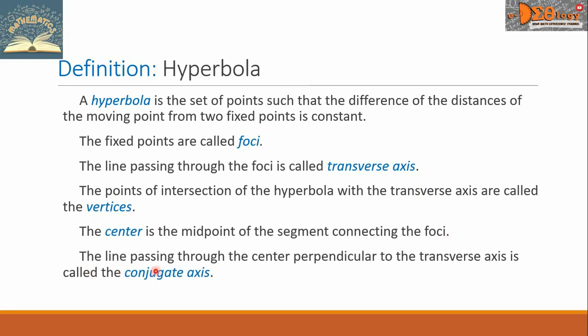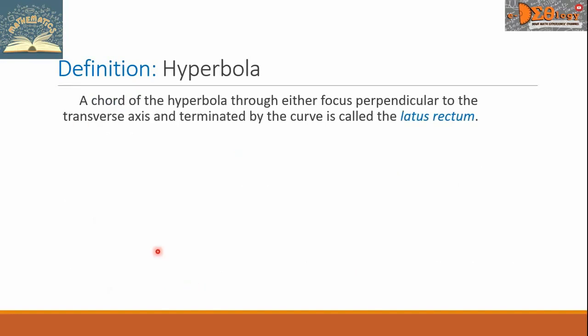The line passing through the center perpendicular to the transverse axis is called the conjugate axis. A chord of the hyperbola through either focus perpendicular to the transverse axis and terminated by the curve is called the latus rectum.